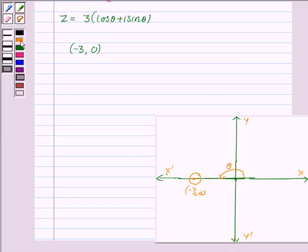Now, z = -3 + 0i. In polar form, it is given by 3 cos θ + i·3 sin θ.